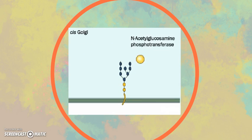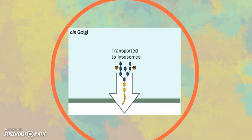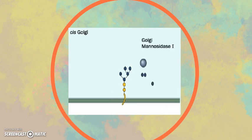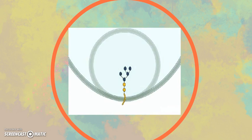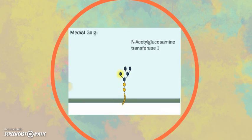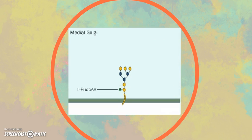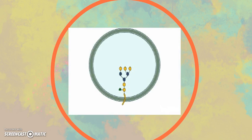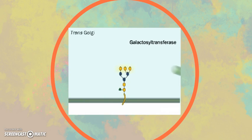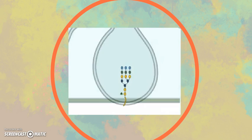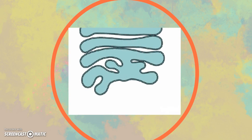Either N-acetylglucosamines attach to the oligosaccharide and are transported to the lysosomes, or enzymes remove more mannose residues. Vesicles transport the modified glycoprotein to the medial Golgi cisternae, where N-acetylglucosamine attaches and more mannose molecules leave. Finally, vesicles transport the glycoprotein to the trans-Golgi cisternae, where galactose and sialic acid join the chain, readying it for transport to the plasma membrane.